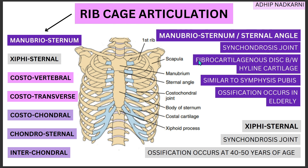Both of these joints are synchondrosis joints, meaning they have a fibrocartilaginous disc between them and the articulating surfaces are lined by hyaline cartilage. These joints are very similar to the symphysis pubis seen at the pelvis. Both of these joints ossify later in life, at around 40 to 50 years of age.